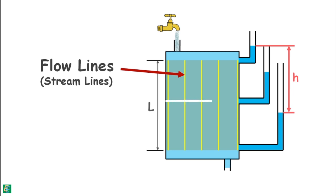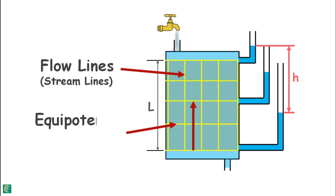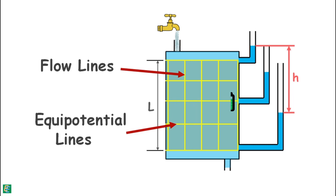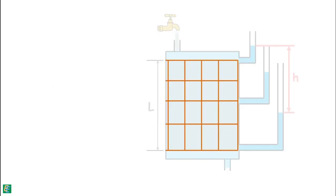At any given level, the total head is the same for all points lying in that plane. So we can draw a line connecting all points of equal head. Similarly, at different levels, such lines of equal head can be drawn. These lines are known as equipotential lines. All points on an equipotential line have the same energy. Both flow lines and equipotential lines cross each other at right angles — we say they are orthogonal to each other. These lines form a kind of net, and this net is called a flow net.